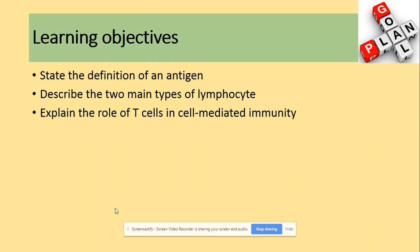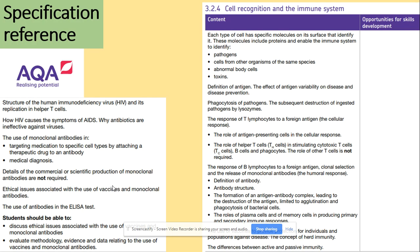In terms of the learning objectives, you need to be able to state the definition of an antigen, describe the two main types of lymphocytes, and explain the role of T cells in cell-mediated immunity. In terms of our specification, we are here today — covering the definition of antigen and the responses of T lymphocytes.